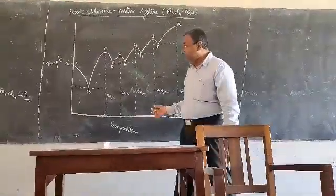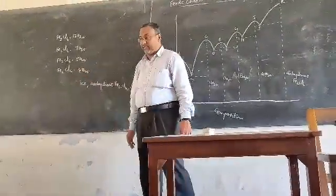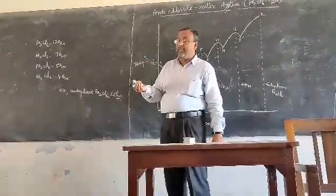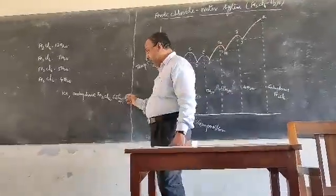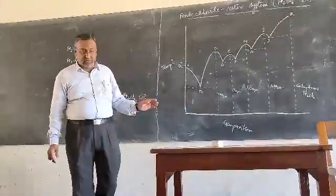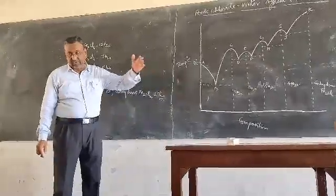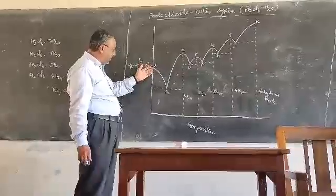It forms four stable crystalline hydrates when we mix the water to the ferric chloride. Now, what are the salient features of this diagram? First of all, we are going to study about the curves. Here, there are many number of curves.